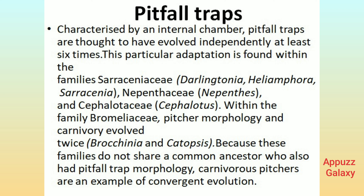Pitfall traps, characterized by an internal chamber, are thought to have evolved independently at least six times. This adaptation is found within the families Sarraceniaceae (Darlingtonia, Heliamphora, Sarracenia), Nepenthaceae (Nepenthes), and Cephalotaceae (Cephalotus). Within the family Bromeliaceae, pitcher morphology and carnivory evolved twice — Brocchinia and Catopsis — because these families do not share a common ancestor with pitfall trap morphology. Carnivorous pitchers are an example of convergent evolution.